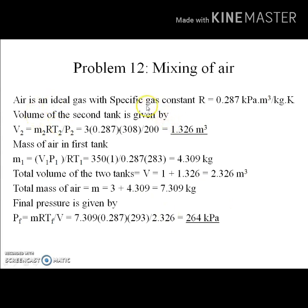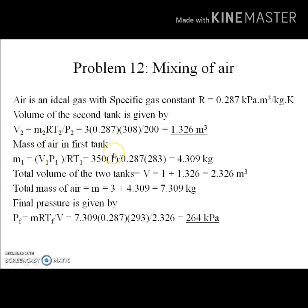The specific gas constant for air is given as R = 0.287. We can find the volume of the second tank directly by applying the ideal gas equation: V2 = M2·R·T2 / P2. Plugging in all the given values, the volume comes out to be 1.326 meter cube. So the total volume of the two tanks is 1 + 1.326 = 2.326 meter cube.